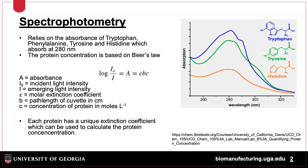The concentration of the protein is therefore related to the absorbance, with the formula shown here: the log of the incident light divided by the emerging light equals the absorbance. Beer's Law states that this absorbance is equal to the extinction coefficient times the path length of the cuvette used to perform the measurement, times the concentration of the protein sample.